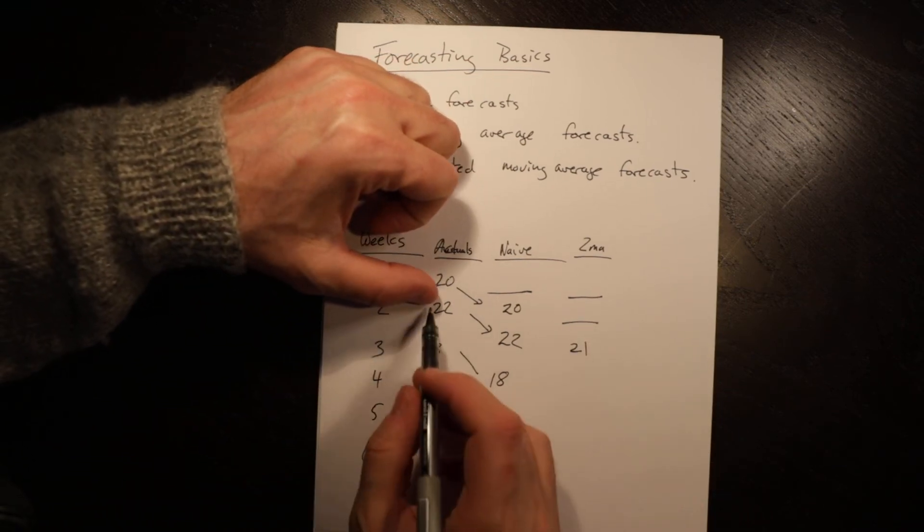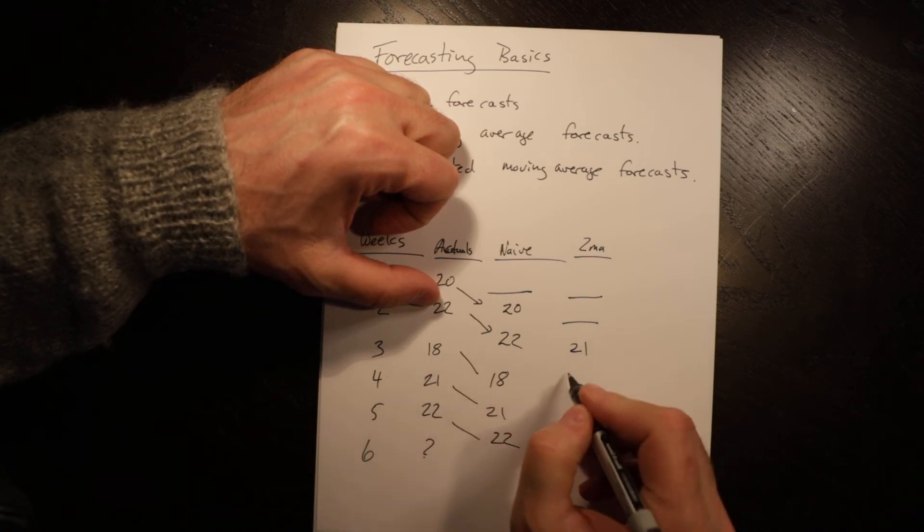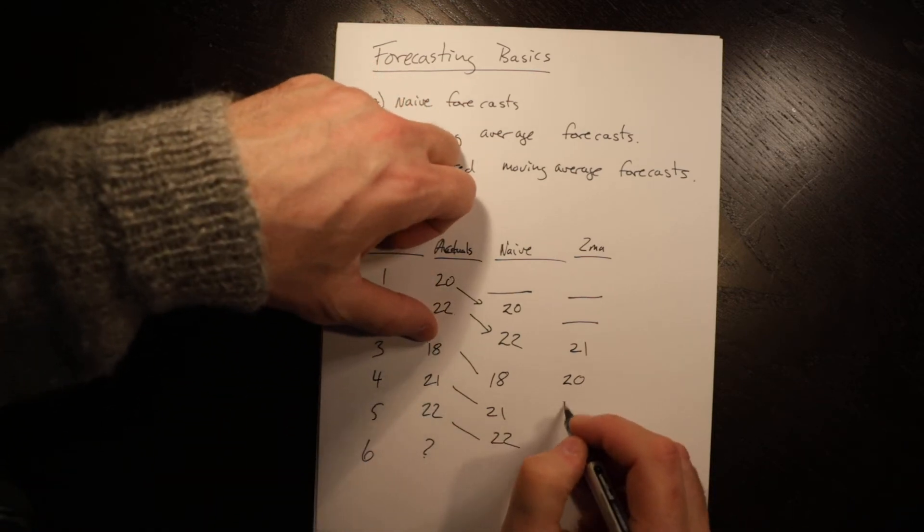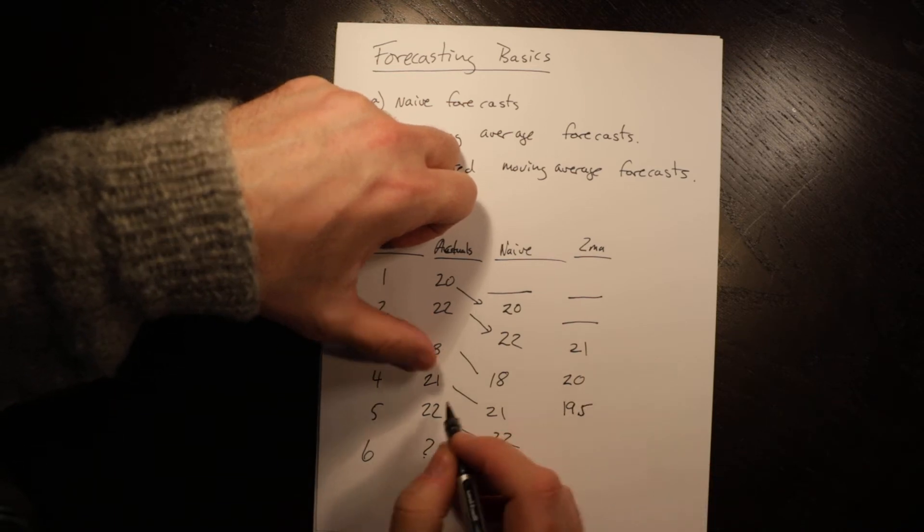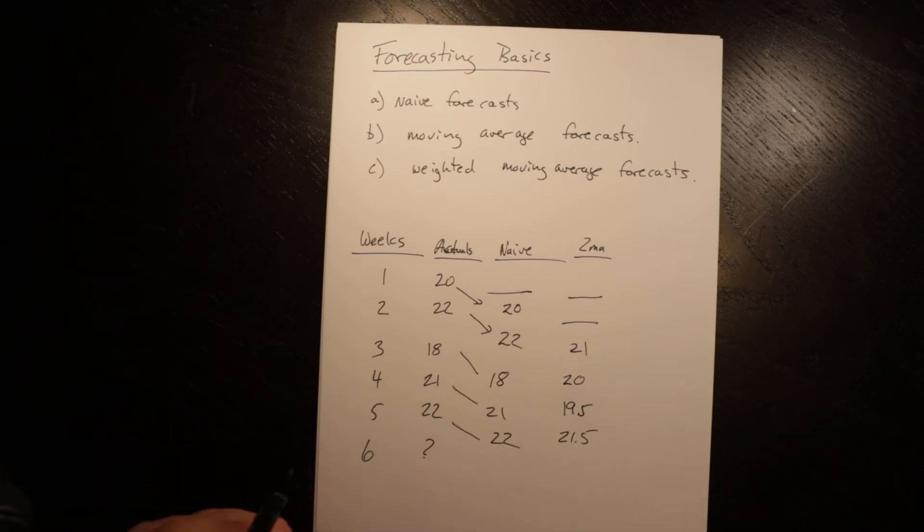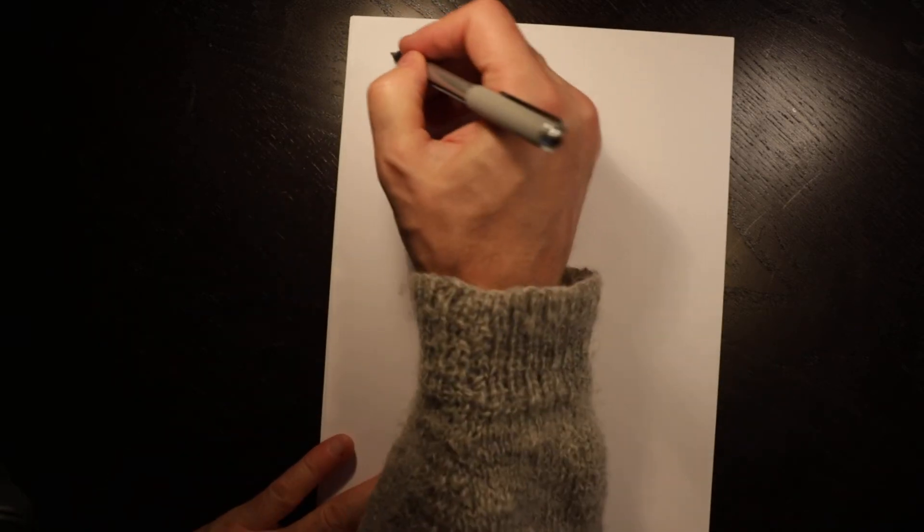Then we move up. This is a moving average. We take the average of 22 and 18, which is 20, 18 and 21, which is 19.5 and 21 and 22, which is 21.5. So really we can do different lengths of moving averages and we will often look at different lengths of moving averages and there are different benefits to different lengths of moving averages.